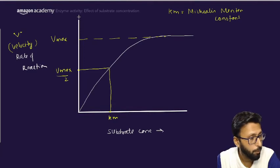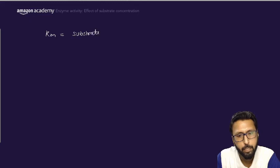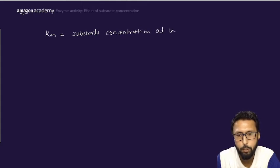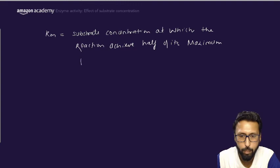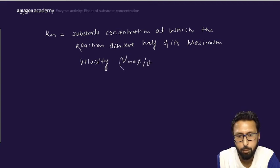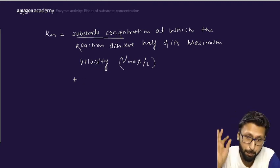This question is very important from an exam point of view and has been asked many times. Km is the substrate concentration at which the reaction achieves half of its maximum velocity, that is Vmax/2. Remember: Km is nothing but a substrate concentration — it is not a rate or a velocity value.